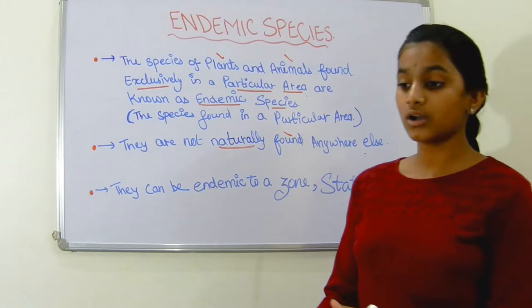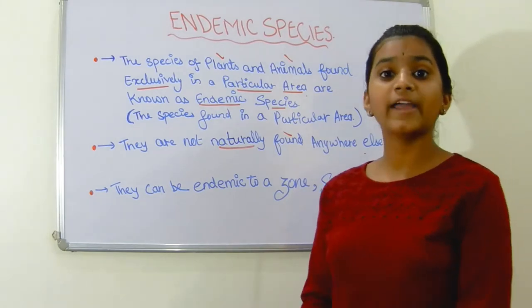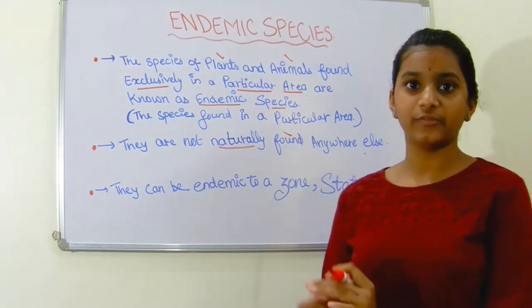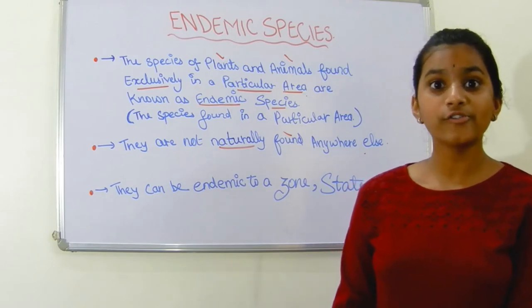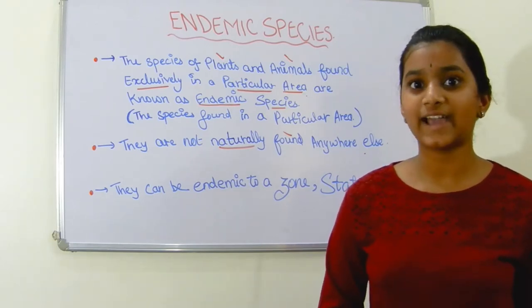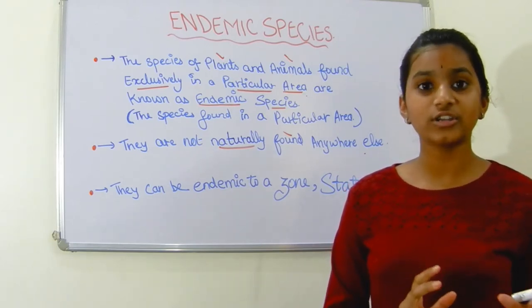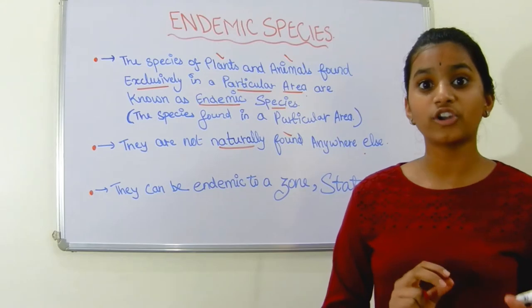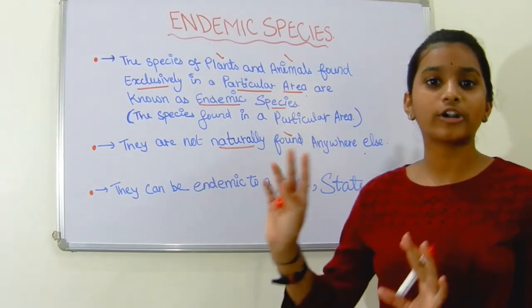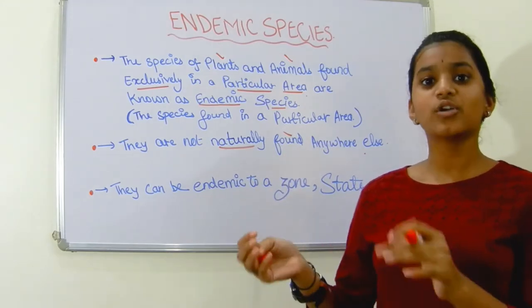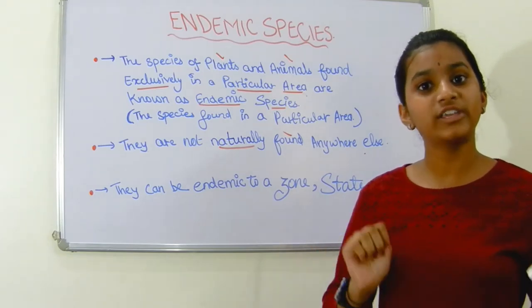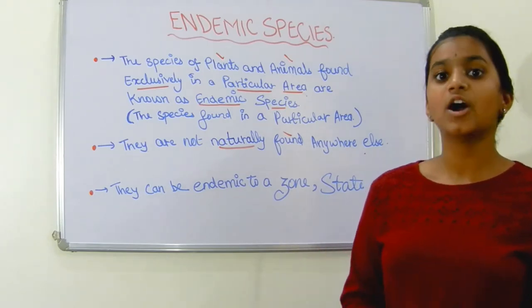For example, if you want to buy a golden retriever dog, that golden retriever is not naturally found in India. The origin of the golden retriever is Scotland. So you have to buy from there — it is not naturally found over here.